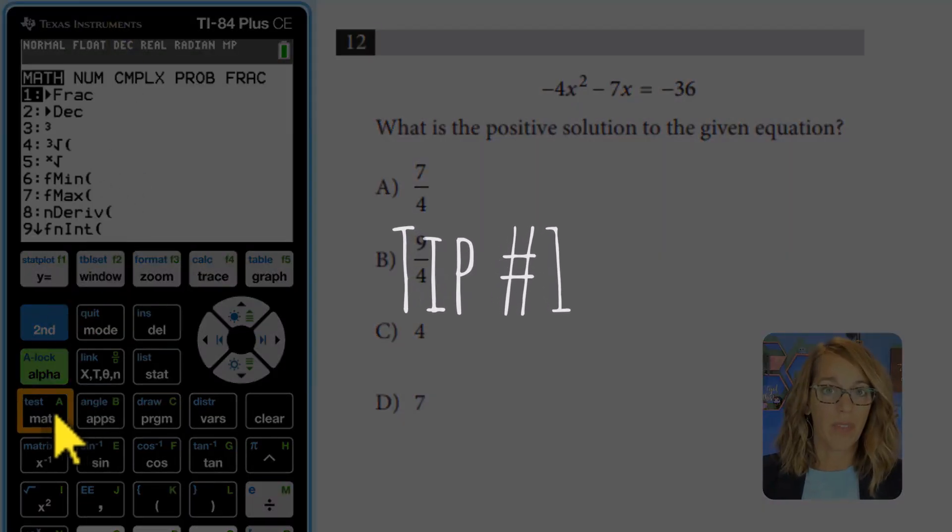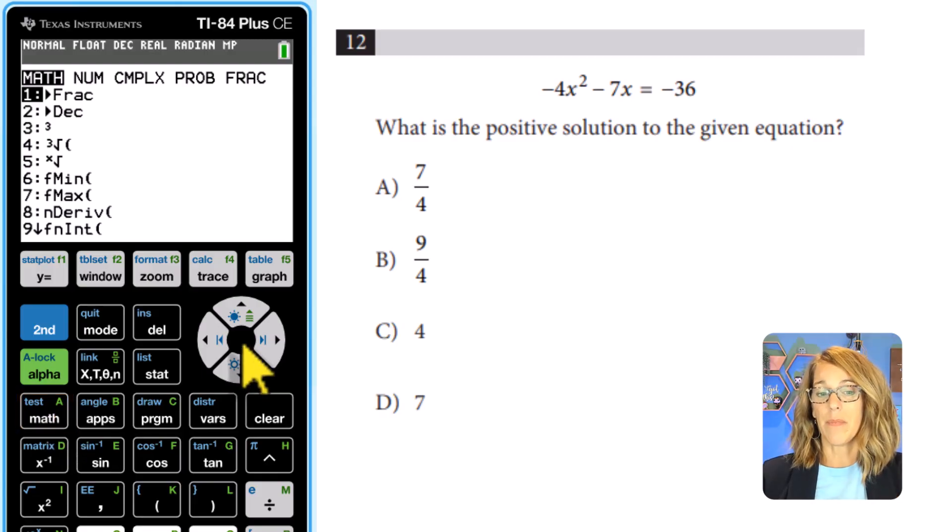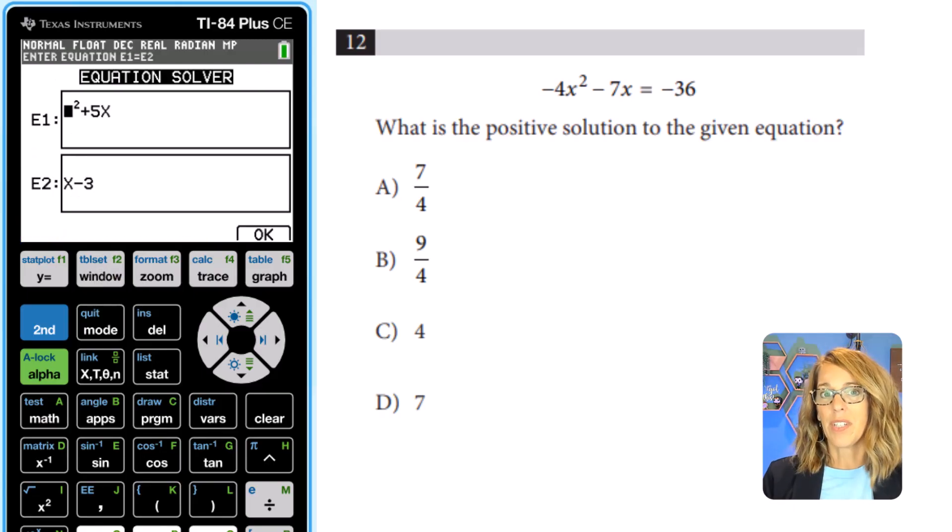To do that we're going to go into our math menu and it's numeric solve that we're looking for which is actually towards the bottom. I'm going to arrow up to get there more quickly so if I arrow up there it is numeric solver which is C. Mine's highlighted so let's go ahead and hit enter. Now it's giving me an equation one and an equation two. This is really the left side and the right side.